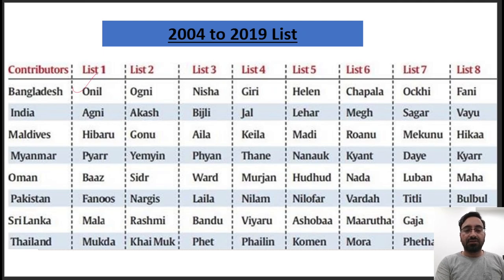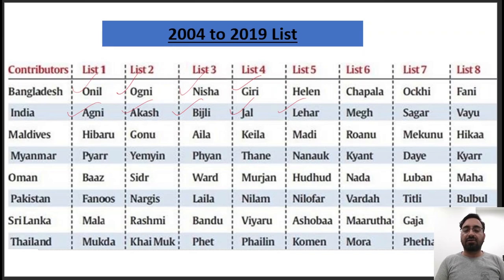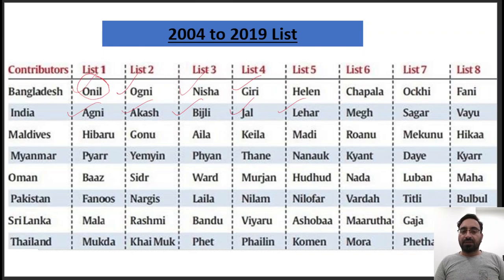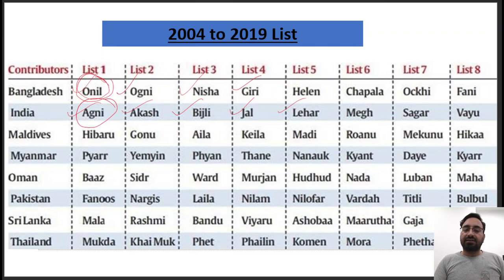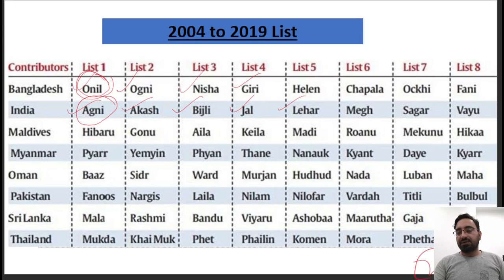Bangladesh gave eight names: Onil, Agni, Nisha, Giri, and others. India gave its eight names: Agni, Akash, Bijli, Jal, Lehar, and so on. Likewise Maldives, Myanmar, Oman, Pakistan, Sri Lanka, and Thailand all gave their names. When the first cyclone came in 2004, the name Onil was given by Bangladesh — it hardly matters where the cyclone came from. The next cyclone's name Agni was given by India, and likewise. This list came to an end in 2019 with Cyclone Amphan.